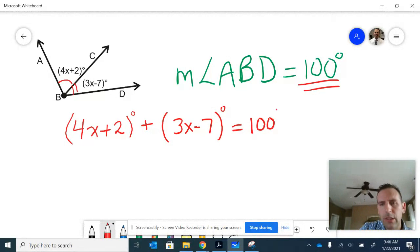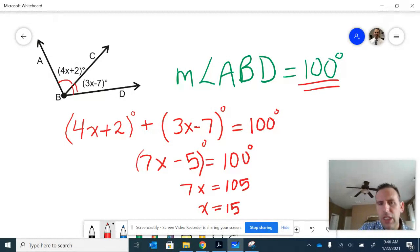And then some linear algebra steps here would be necessary to solve that. You have 4x plus 3x, which is 7x. Of course, 2 minus 7 is negative 5, and then you have the 100 degrees. If you add 5 to both sides, you'll get that 7x is equal to 105. And then dividing by 7, you should get 15. So you can find the value of x.